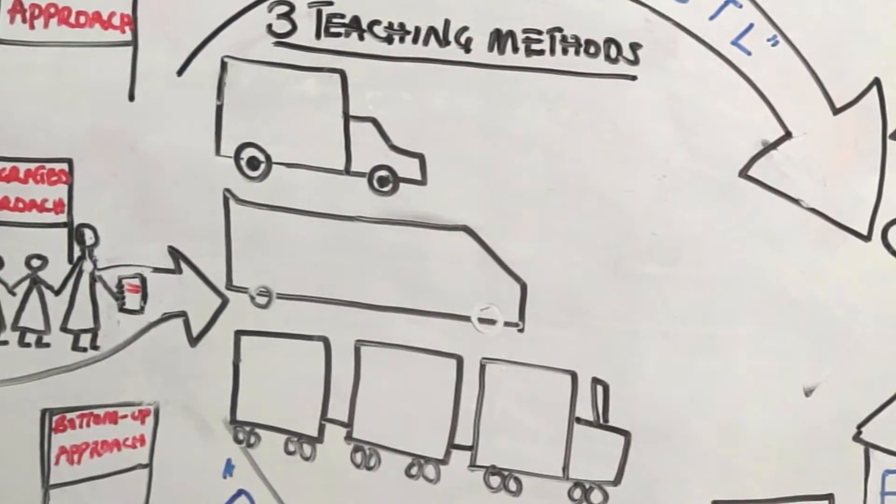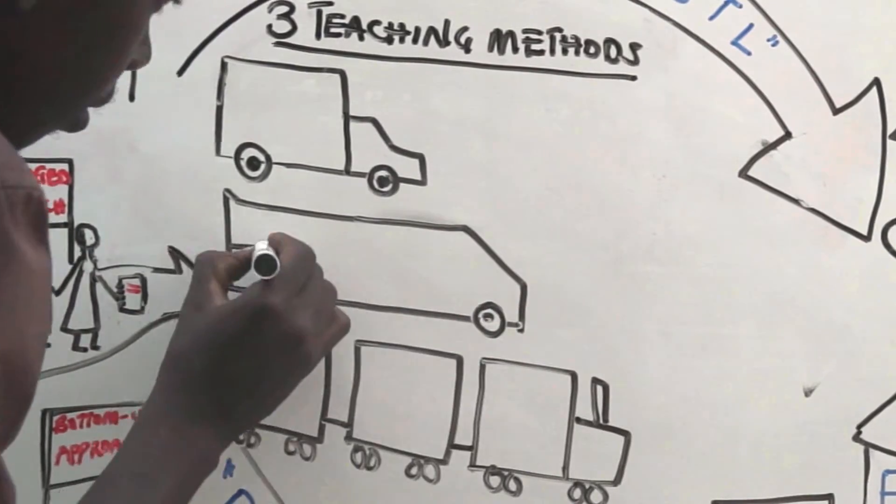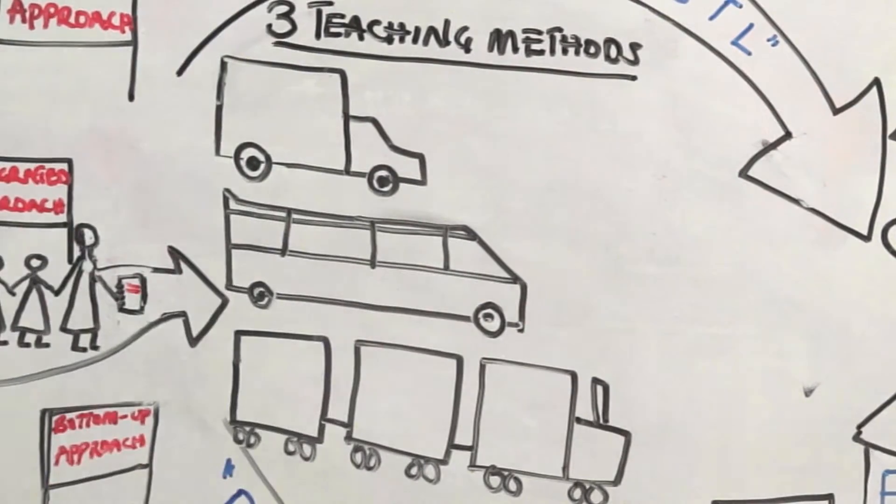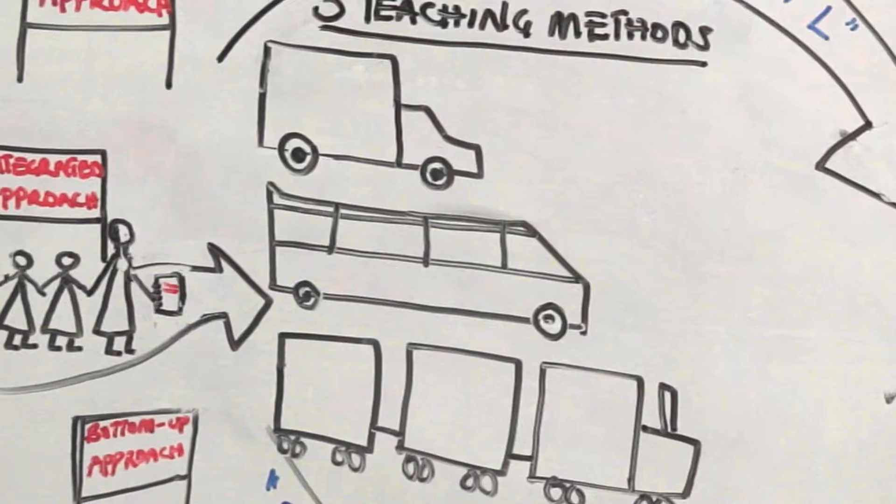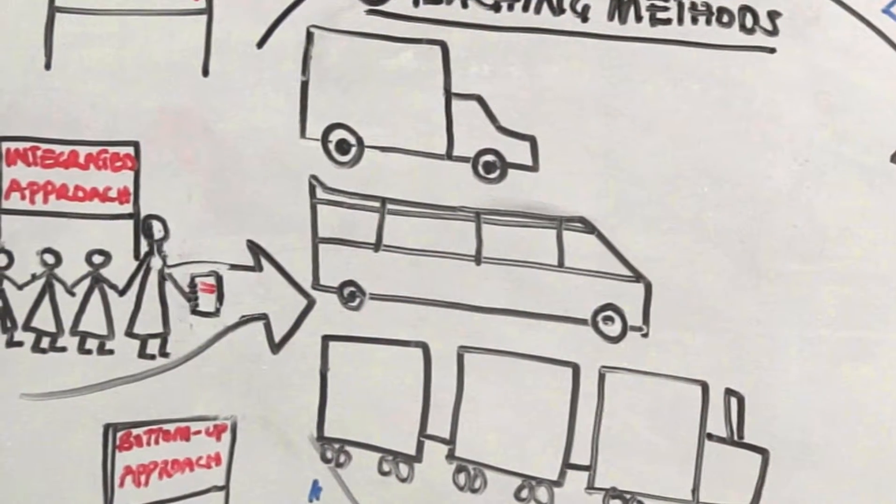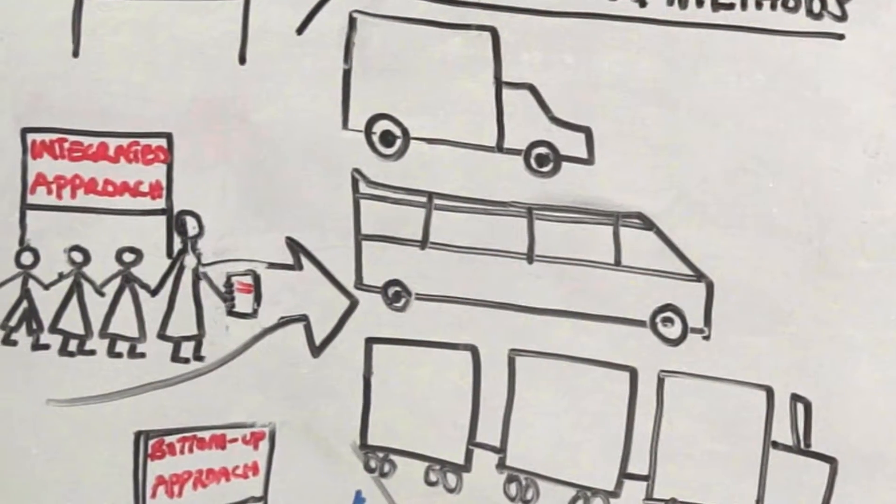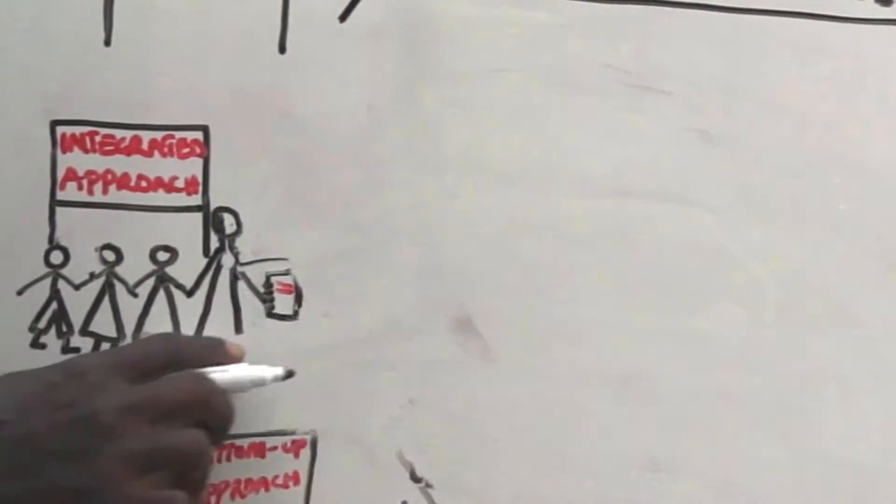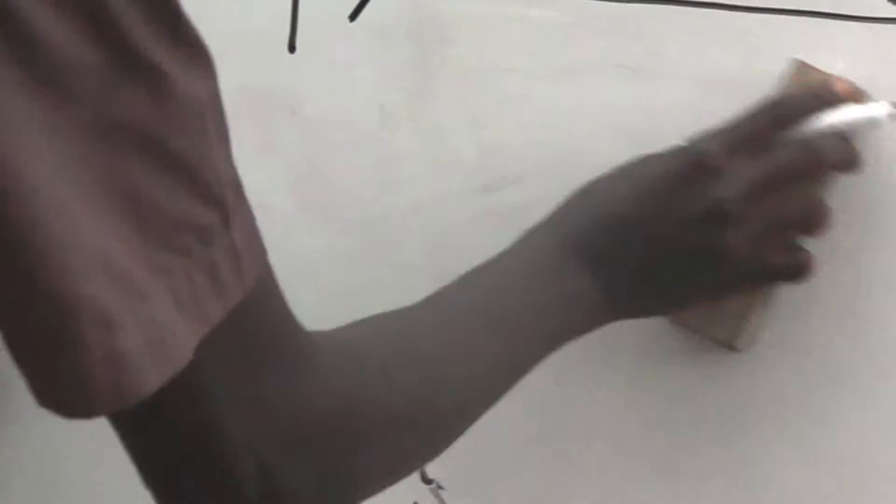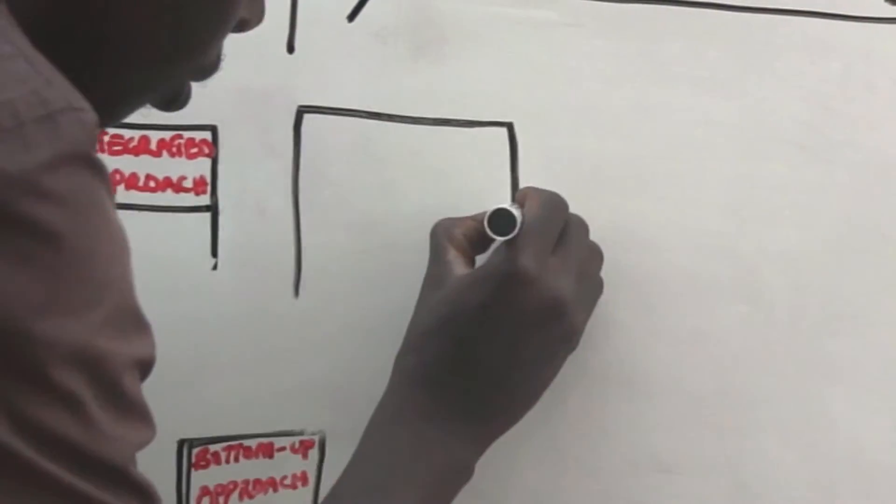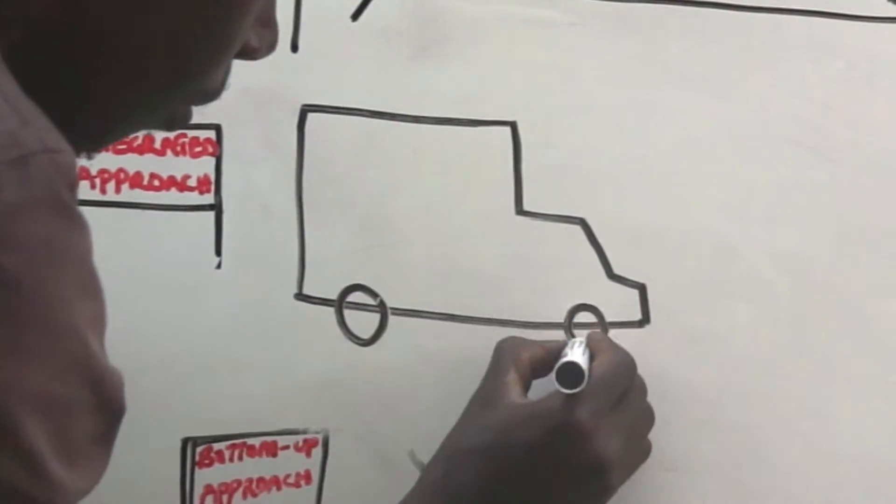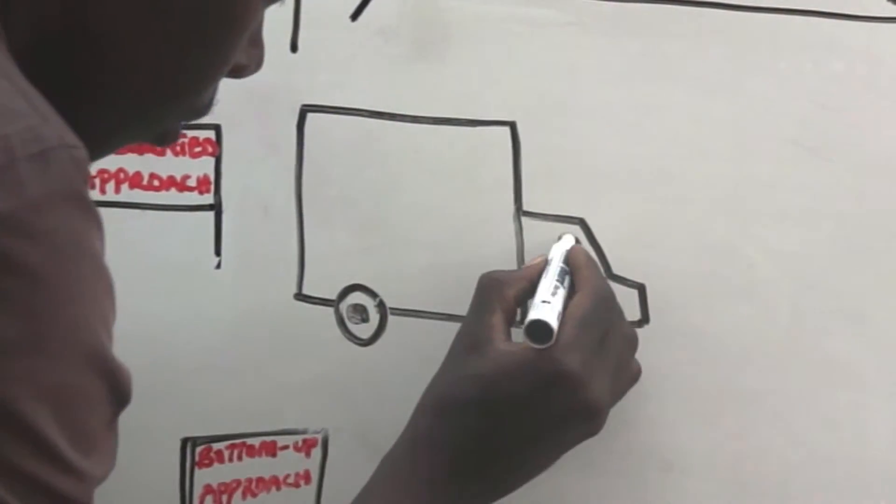One day you may decide to use a lorry, the next day a train, and the third day a bus. In other words, methods are the teaching techniques and strategies you use on a daily basis to help your pupils make progress toward the five big ideas. With this understanding, let's look at Mango Tree's three basic teaching methods.